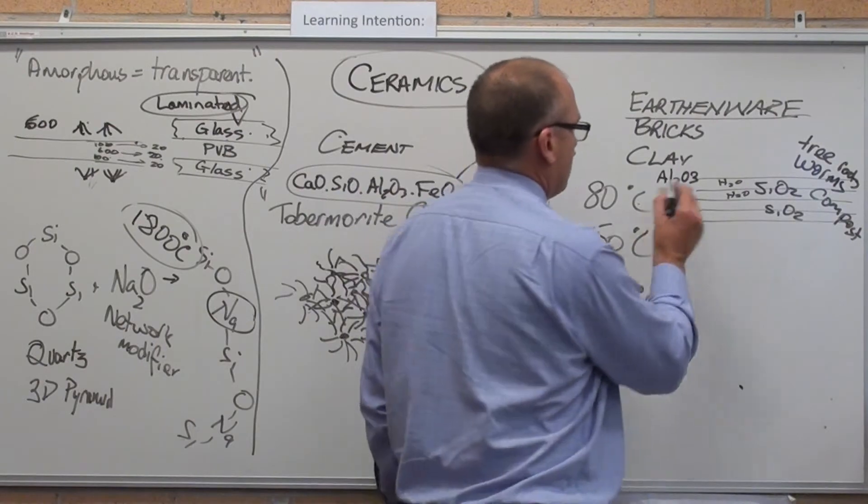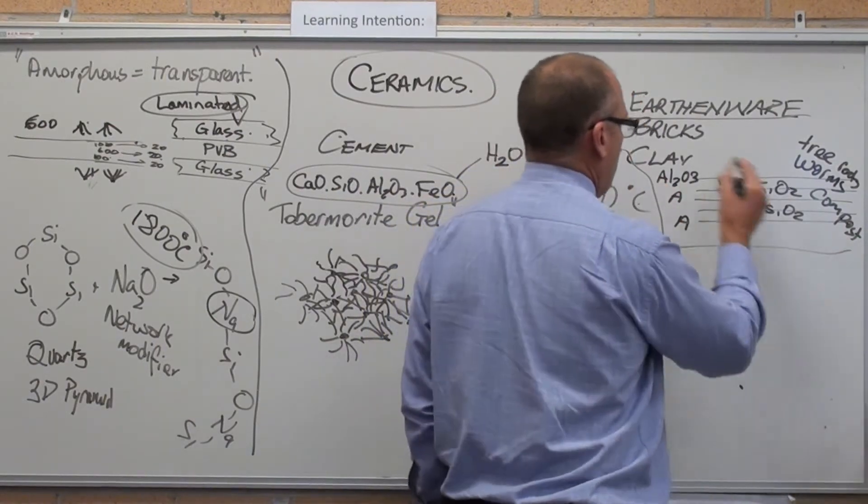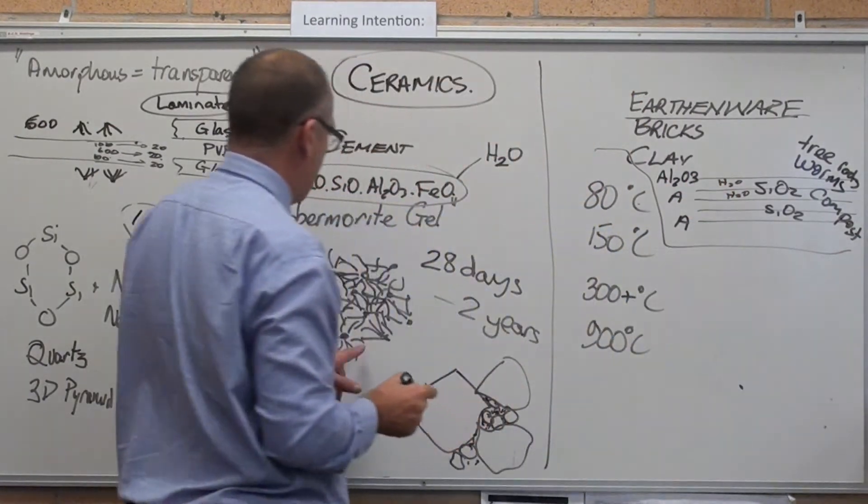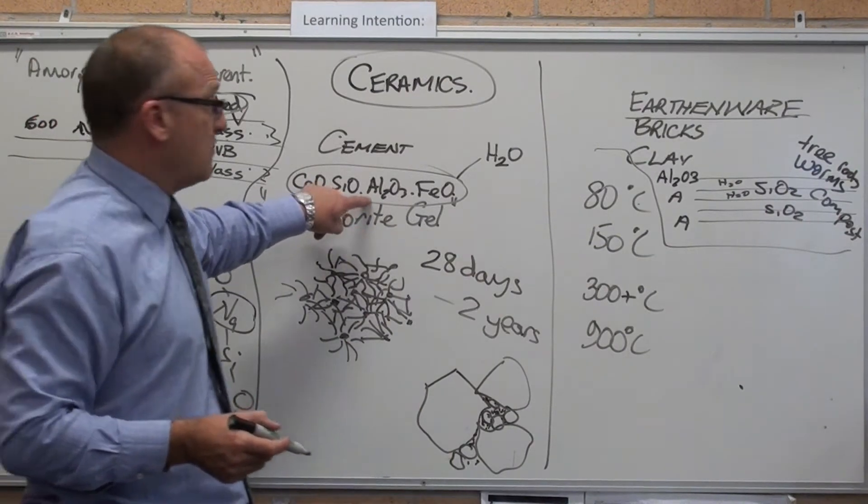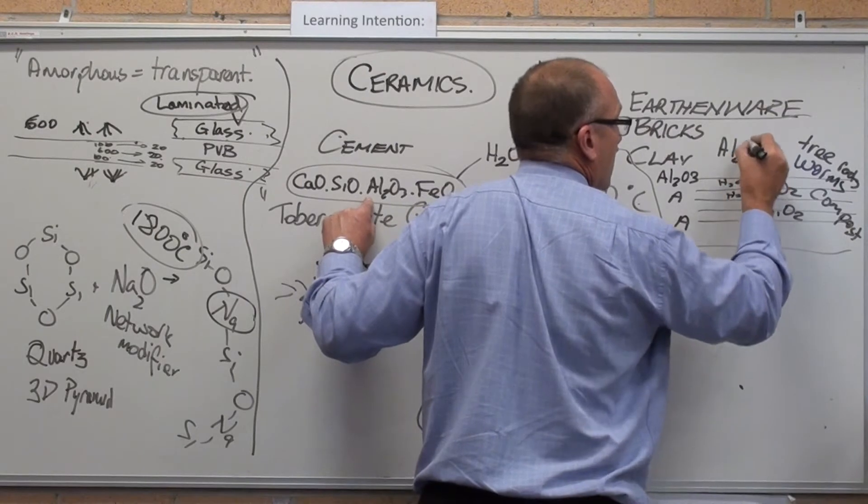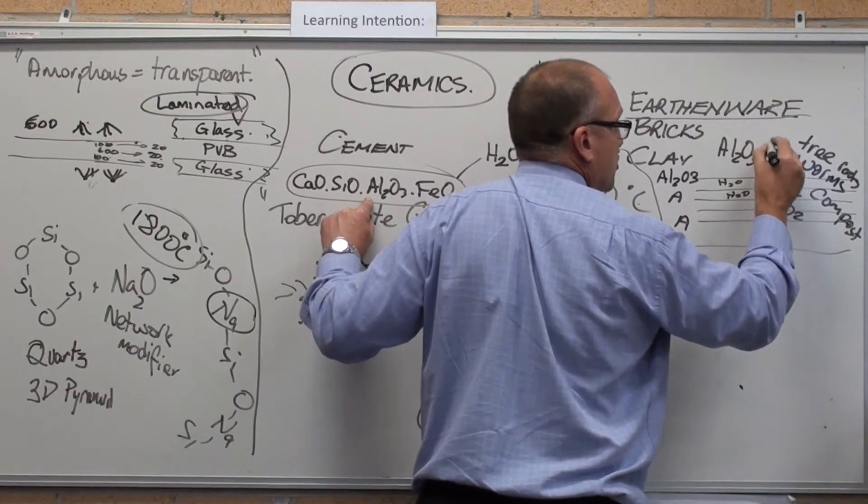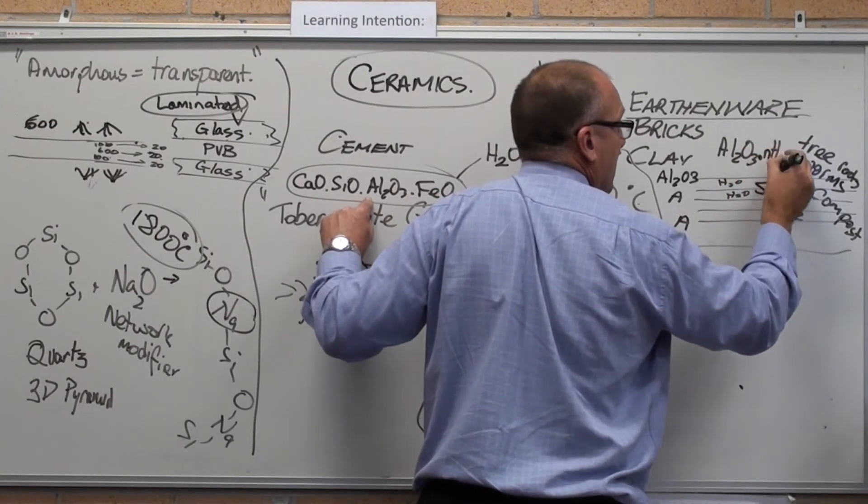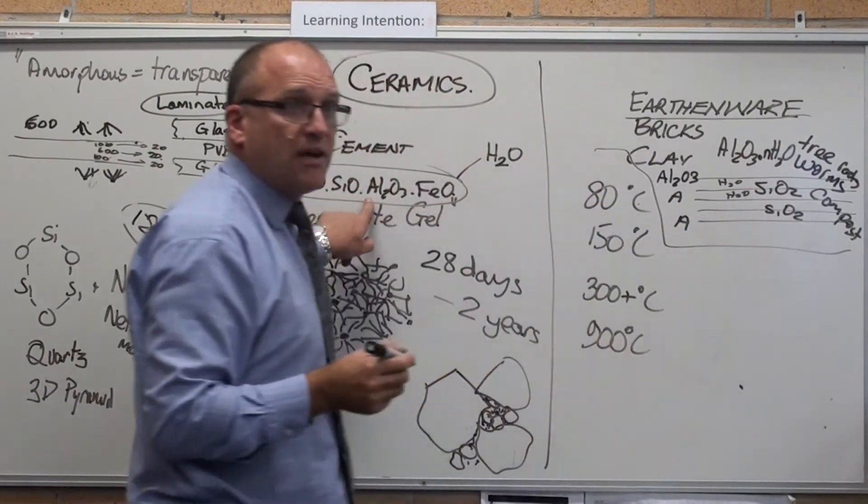First thing that happens. This alumina, once again, does not want to live as straight alumina. It wants to live as a hydrated product. Al2O3 dot something H2O. N H2O. It gives us a hydration product.